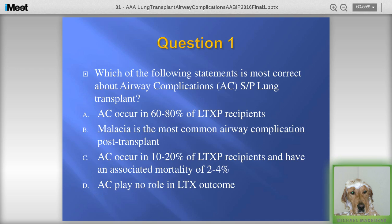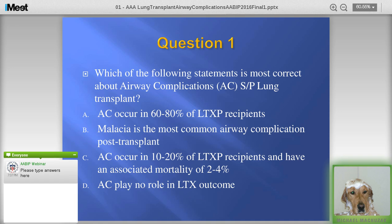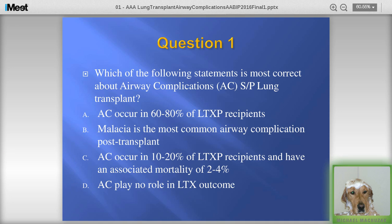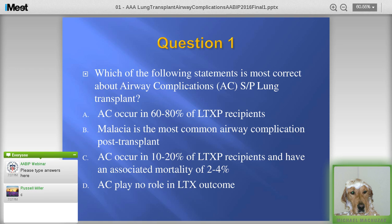Let's start with a quick question. Which of the following statements is most correct about airway complications after a lung transplant? They occur in 60 to 80% of recipients; the most common one is malacia; they occur in 10 to 20% of recipients with an associated mortality of 2 to 4%; or they play little or no role in lung transplant outcome. You can type your answer into the text box in the bottom left-hand corner.